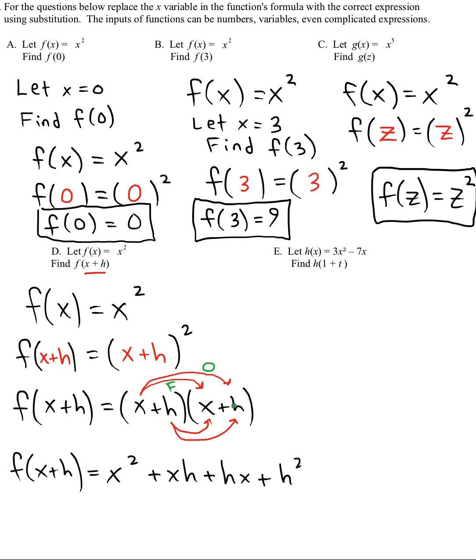This is the o, the outer terms. This one will be the inners. And these are the lasts. That's FOIL. And there should be four terms at the end.